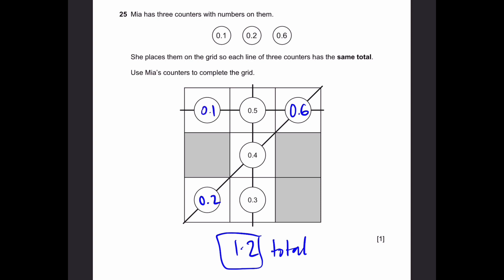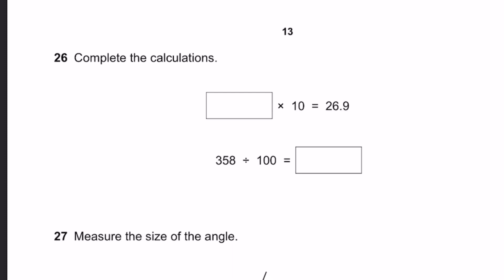Question 26. Complete the calculations. Dash into 10 is 26.9. Bring 10 to the other side. 26.9 divided by 10. That will equal 2.69. 358 divided by 100 is dash. That's simply 3.58.